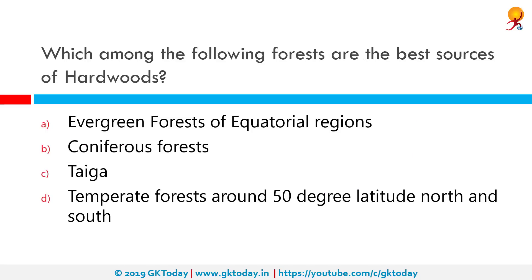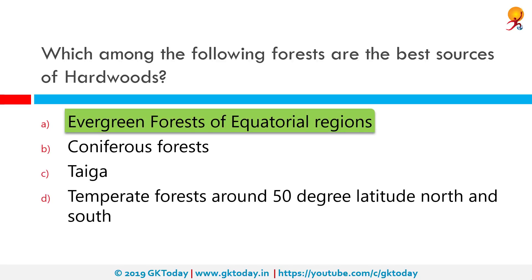Which among the following forests are the best sources of hardwoods? The correct answer is evergreen forests of the equatorial region. Hardwood is the wood from dicot trees, usually found in broad-leaved temperate and tropical forests. In temperate and boreal latitudes they are mostly deciduous, but in tropics and subtropics mostly evergreen.